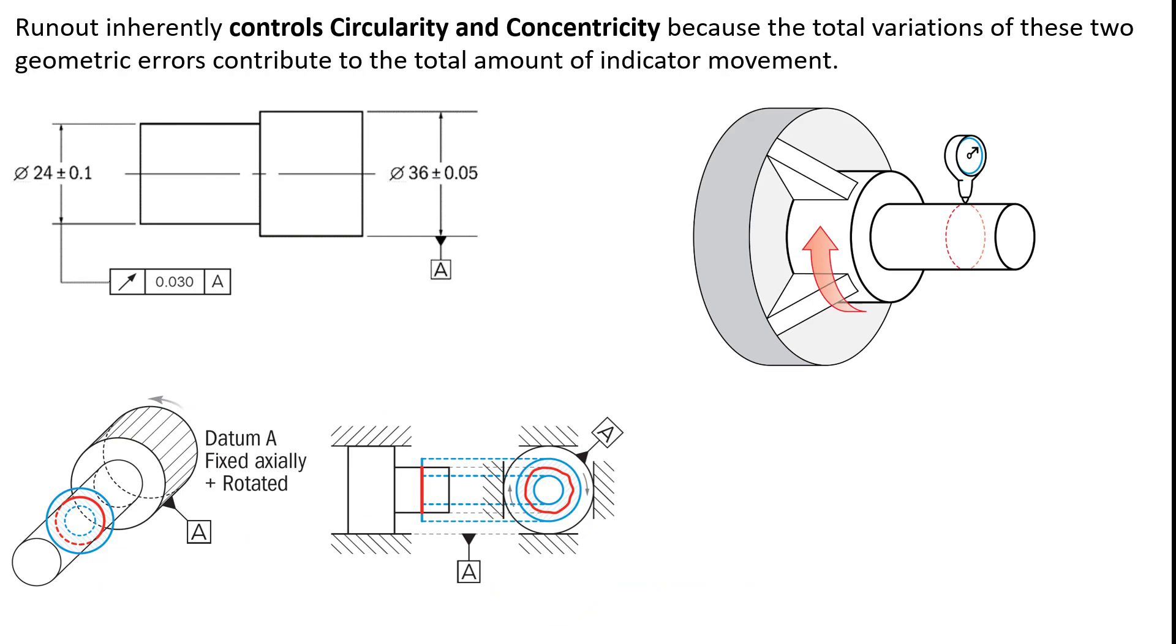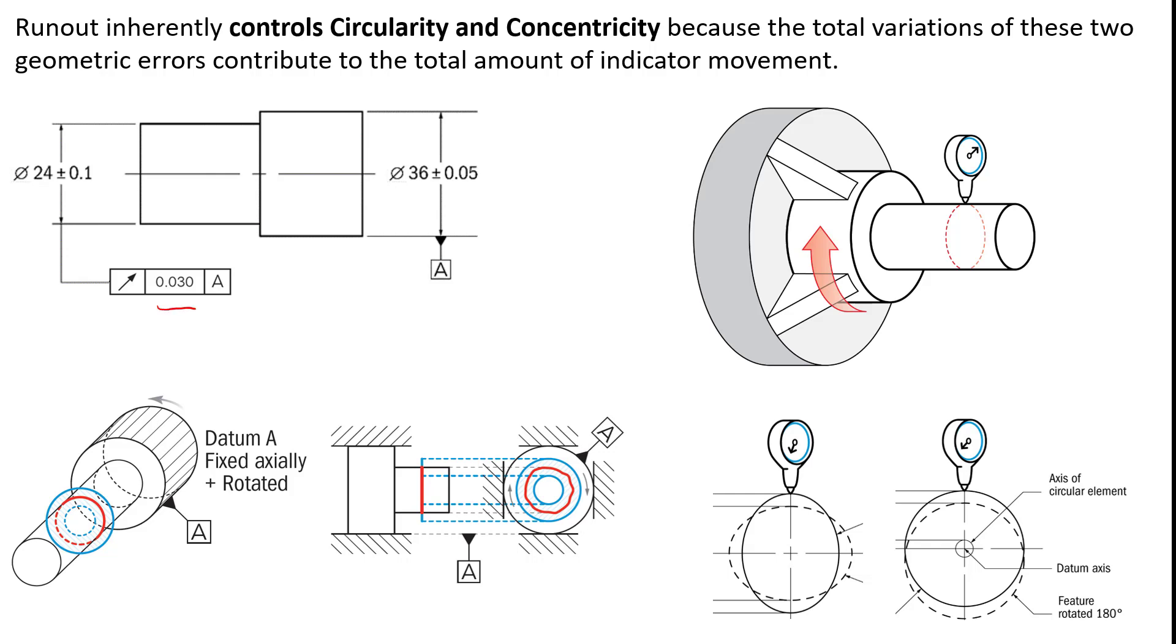Let's look at runout here real quick. The question was about runout. I took the assumption that it was not total runout, so I'm doing my comparison to just runout. In this one here you can see I've changed the drawing up. Now the drawing has a runout requirement of 0.030. Our datum axis is still the same.